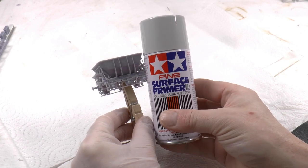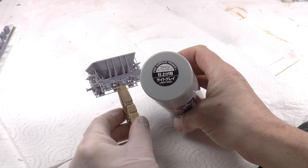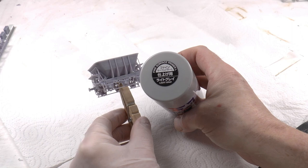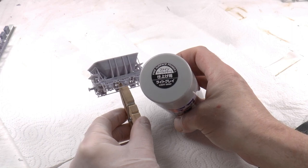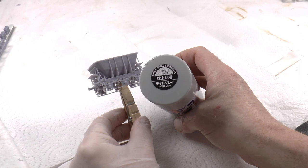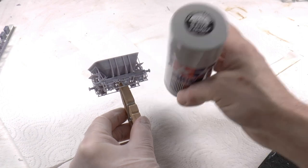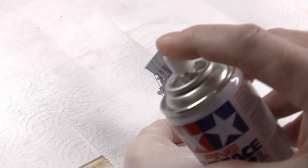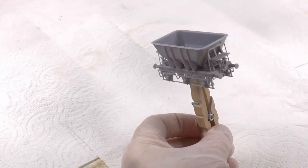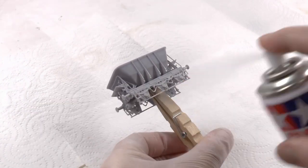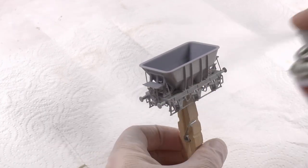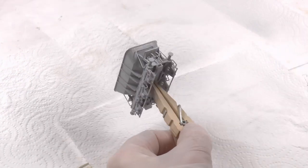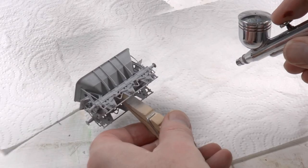Now we need to prime this. It's important to prime all 3D printed parts because it will prevent moisture from going in and out from the plastic, and by doing that we prevent warping. I'm using this Tamiya Surface Fine Primer in gray color, and I'm just misting this over the entire model so I got all of the surfaces sealed properly. And then I leave this to dry for a few hours before I start to paint it with acrylics.